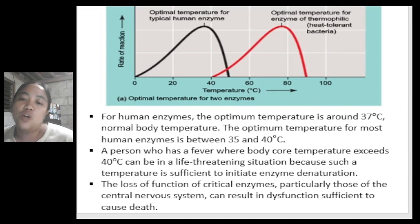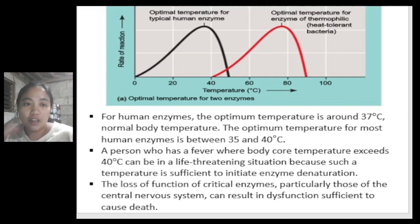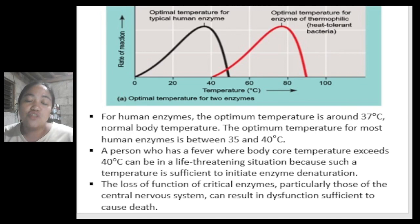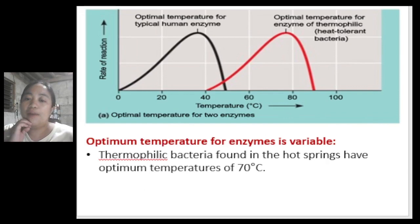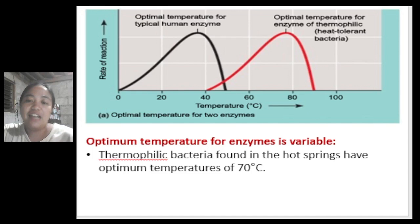When a person has a fever where body core temperature exceeds 40 degrees Celsius, it can be life-threatening because such temperatures are sufficient to initiate enzyme denaturation. The loss of function of critical enzymes, particularly those of the central nervous system, can result in dysfunction sufficient to cause death. For other organisms, such as thermophilic bacteria found in hot springs, the optimum temperature can be as high as 70 degrees Celsius.